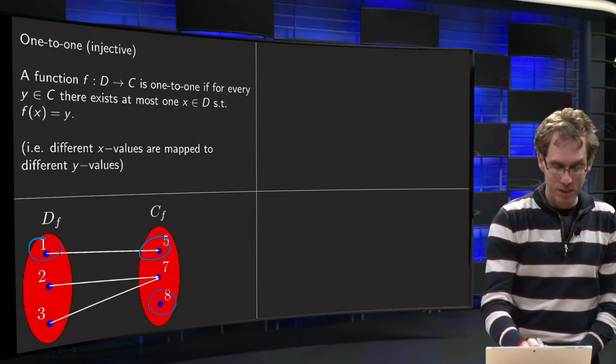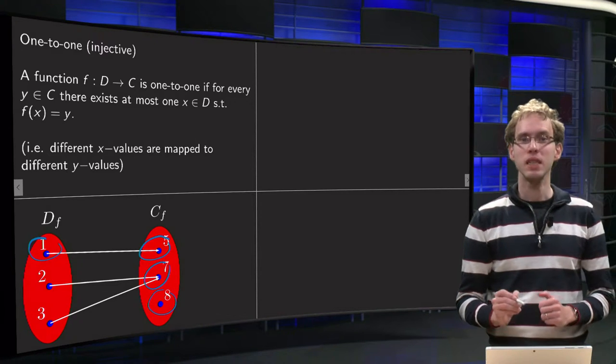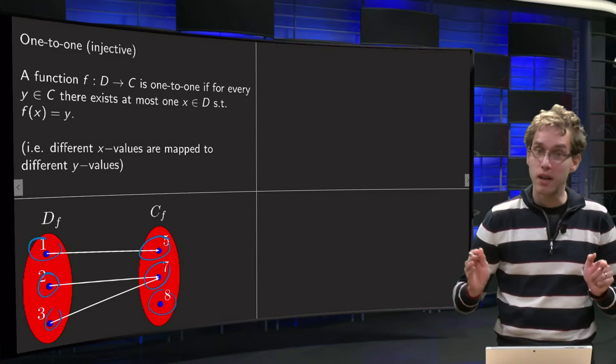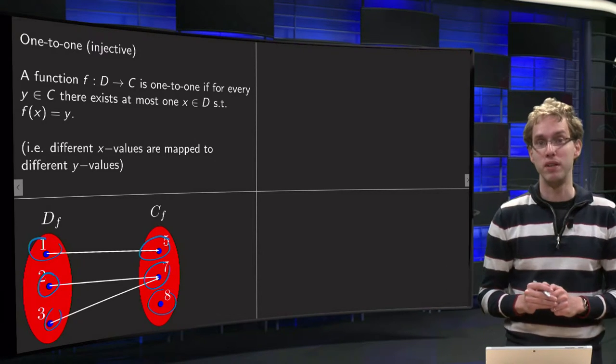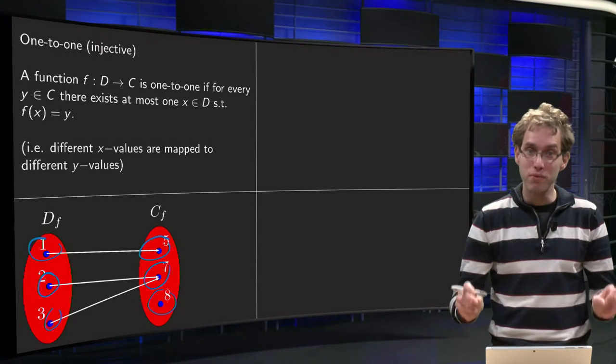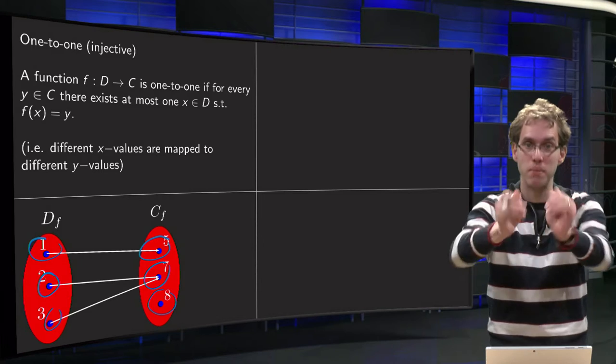But then we look at seven, and we see both two and three, they are both mapped to seven. So that means that this function is not one-to-one, because different x values are mapped to the same y value.